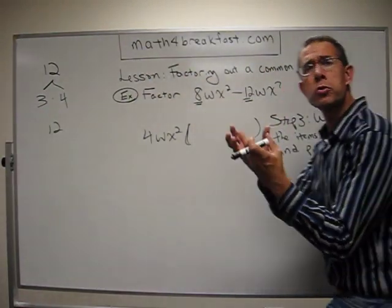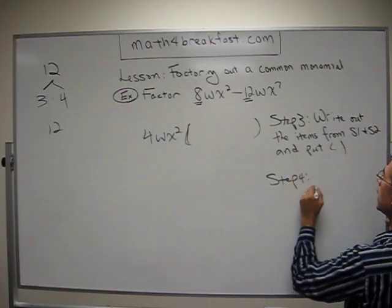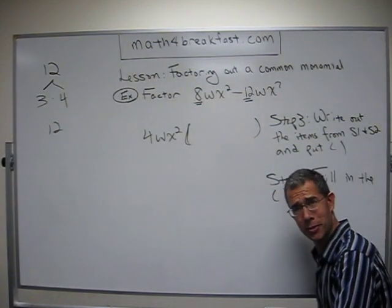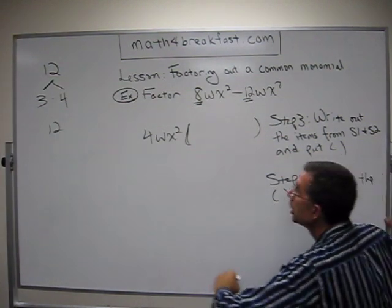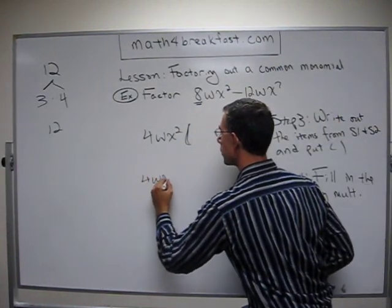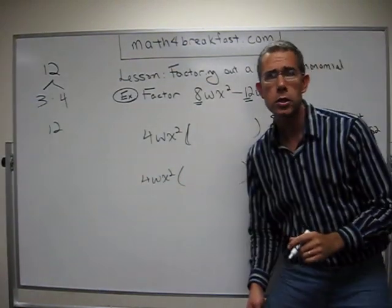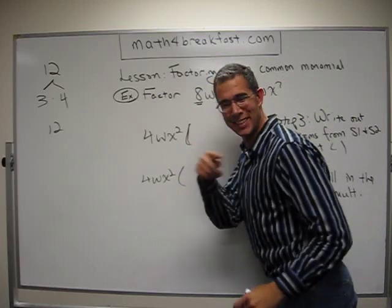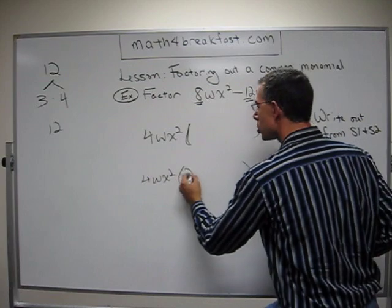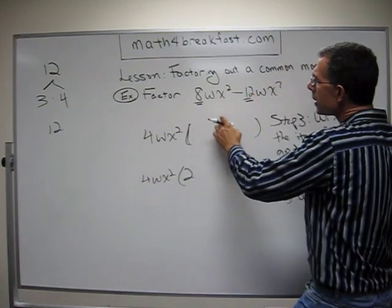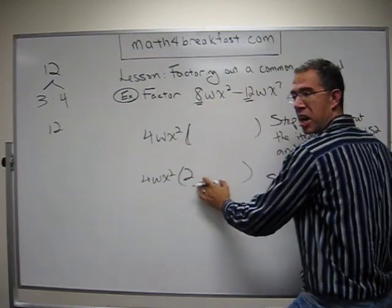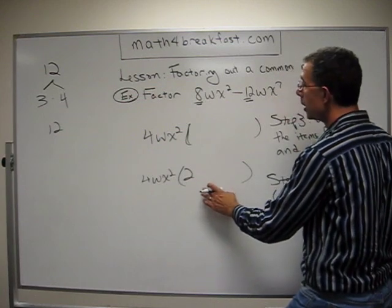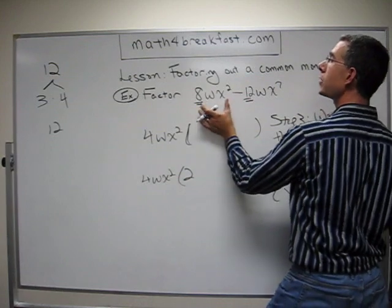Here's the grand finale — step 4: fill in the parentheses using multiplication. In my original problem I need an 8, and outside I've got a 4. So 4 times 2 would get me back to the 8. I need a W but I already have a W, so W times — I don't need to multiply any more W's here. X squared — I have X squared already out here, so leave it blank. I know now that 4WX squared times 2 gets me back to 8WX squared.